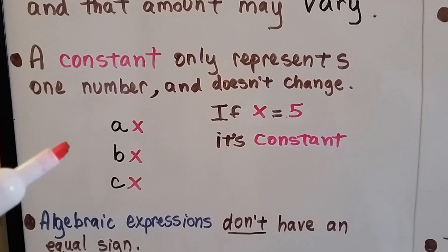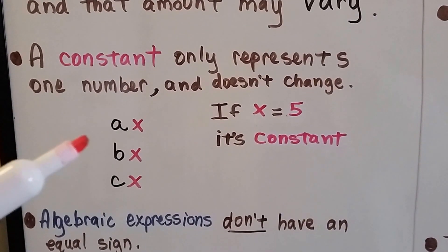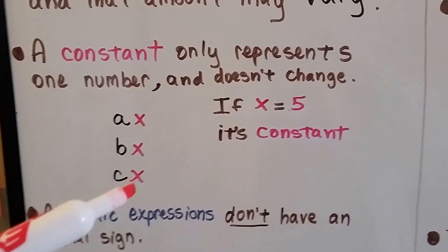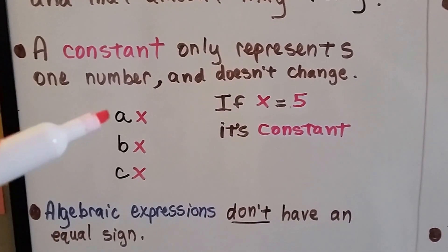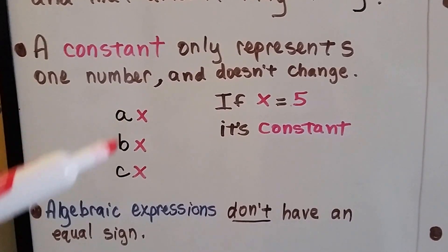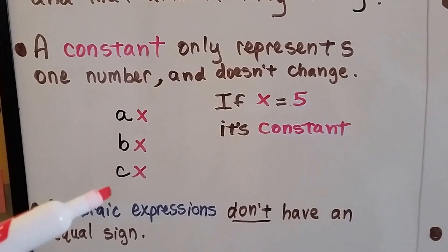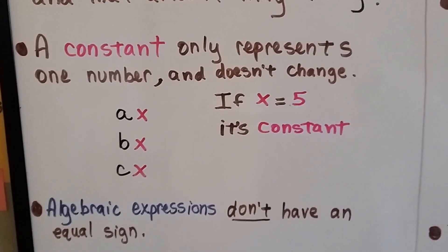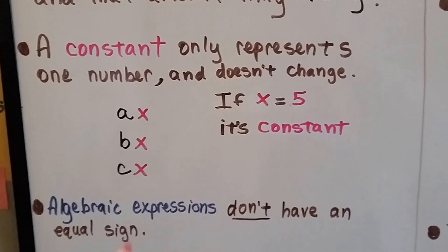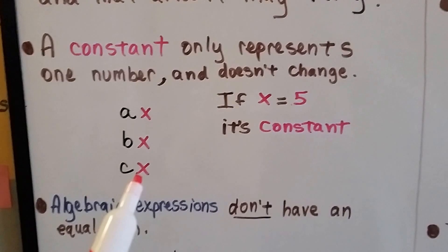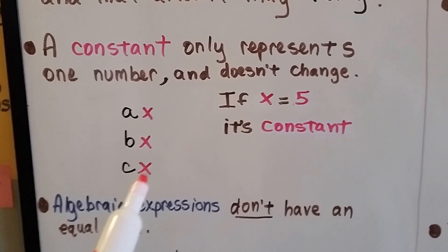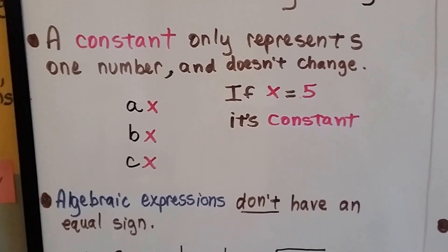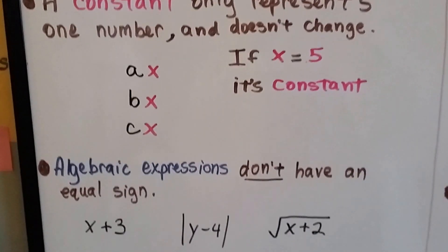So if x is equal to 5, then x is a constant — it stays the same. A, B, and C would be the variables, and x is also a variable. It's taking the place of an unknown number, but it's a constant variable — it's a constant number.